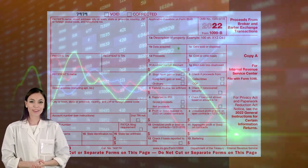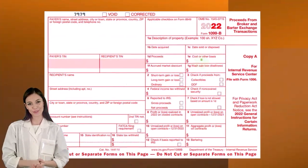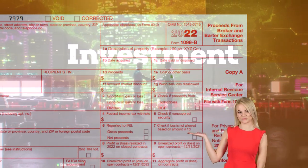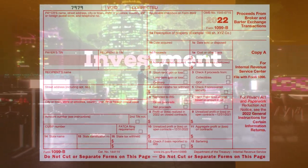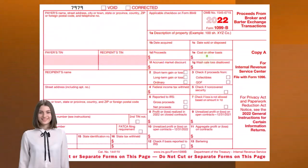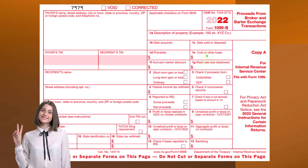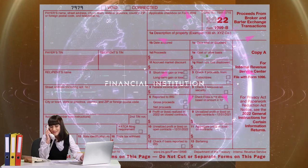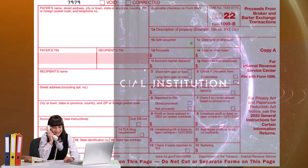The date acquired and the cost are usually the most problematic things to come by from investments. It used to be that financial institutions, which are just facilitating your trades, weren't held as closely responsible for that information. But more and more, they've been pressured to provide the date acquired as well as the cost.